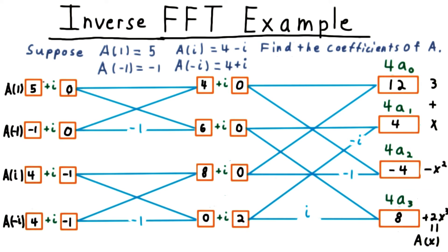To get the original polynomial, we divide by n, 4 in this case. Thus, we have that the original polynomial was 3 plus x minus x squared plus 2x cubed.